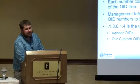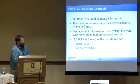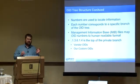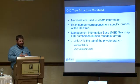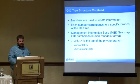To summarize: numbers correspond to a location, kind of like a street address or IP address. There's what they call the management information base, or MIB file — this is what helps translate these numbers into a more human-readable form. And 1.3.6.1.4 is off the private branch, and that's where vendor and custom OIDs are going to live.